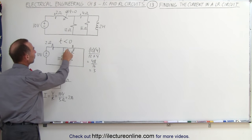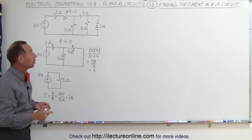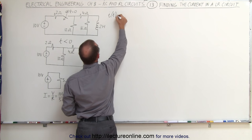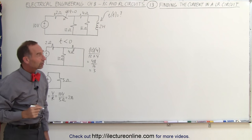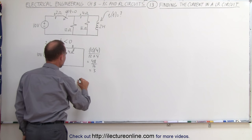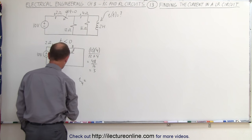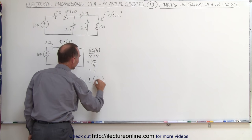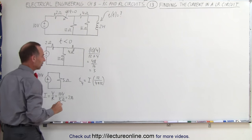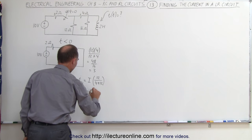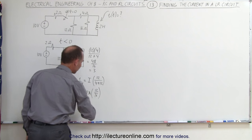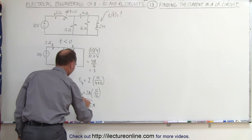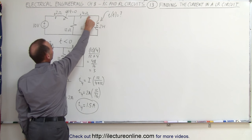How much of that will flow through the 4 ohm resistor, and how much will flow through the 12 ohm resistor? After all, we want to know how much current flows through the inductor. The current I through the 4 ohm resistor equals the source current times the ratio of the other branch resistance divided by the total — 12 over (4 plus 12). So I through the 4 ohm resistor equals 2 amps times 12 over 16, which is 3 quarters, giving 1.5 amps. That will be the current reaching this branch point.